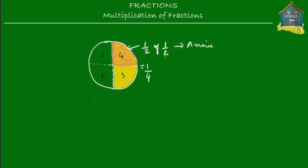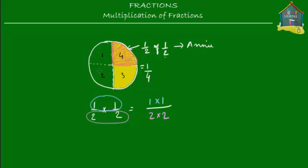Now if you have to write this down as a mathematical statement, half of half is nothing but half times half — half multiplied by half. When you multiply fractions, you multiply the numerators with each other and then you multiply the denominators with each other. So you do one times one, which are the numerators, and then two times two, which are the denominators. One times one is one, and two times two is four.